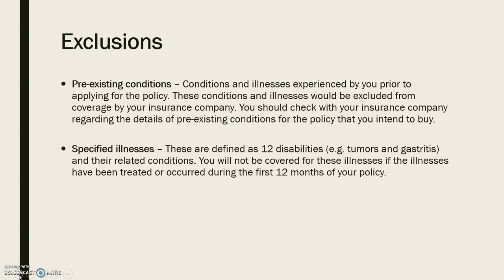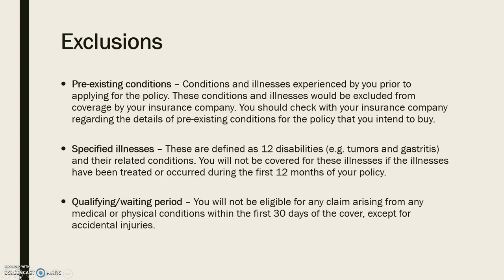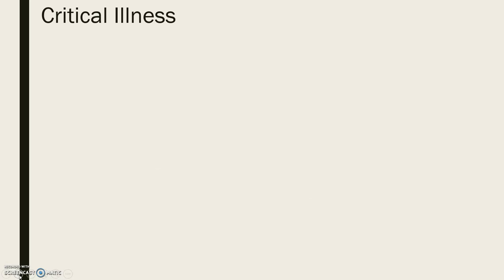Specific illnesses are defined as 12 conditions — for example, tumors and gastritis and their related conditions. You will not be covered for these illnesses if the condition has been treated or occurred during the first 12 months of the policy. There is also a qualifying or waiting period: you will not be eligible for any claims arising from any medical or physical condition within the first 30 days of cover, except for accidental injuries.